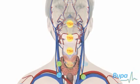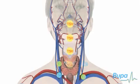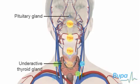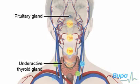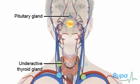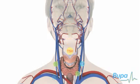An underactive thyroid or hypothyroidism is most often caused by a problem in the thyroid gland itself. It can also occur because the pituitary gland isn't producing enough TSH, but this is less common.